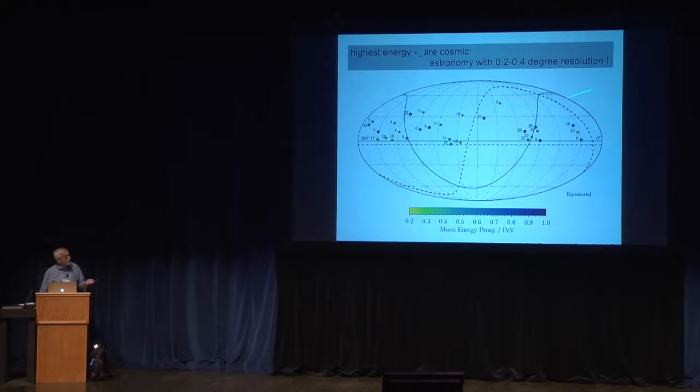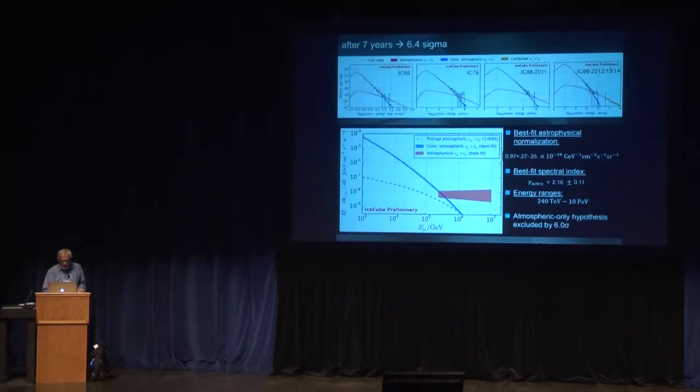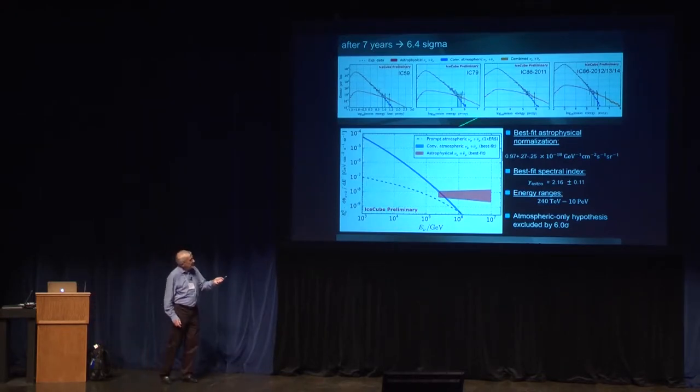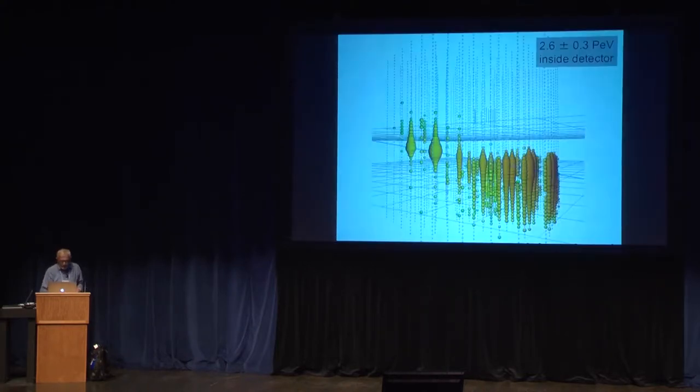So these are the gold-plated ones that exceed 10 to the 5 GeV, the 100 TeV. And this is actually the sample you want to do astronomy with. The highest energy ones are reconstructed to 0.2 to 0.4 degrees, which becomes almost respectable to do astronomy. The flux has about a slope you expect. This slide is not worth... the details don't matter. Here is the bottom line. That's the flux. And this is the slope, 2.16. Textbook physics tells you 2.